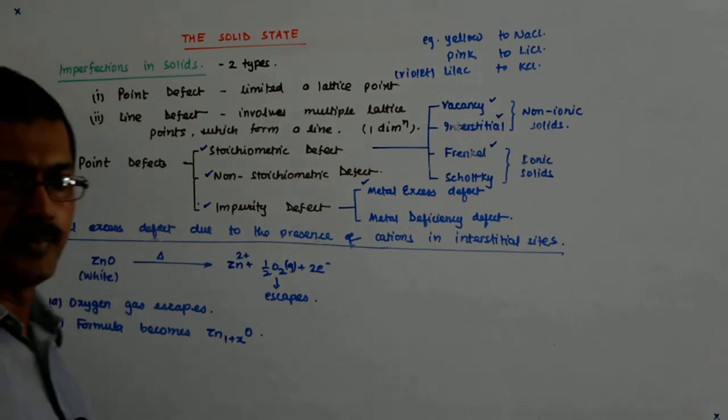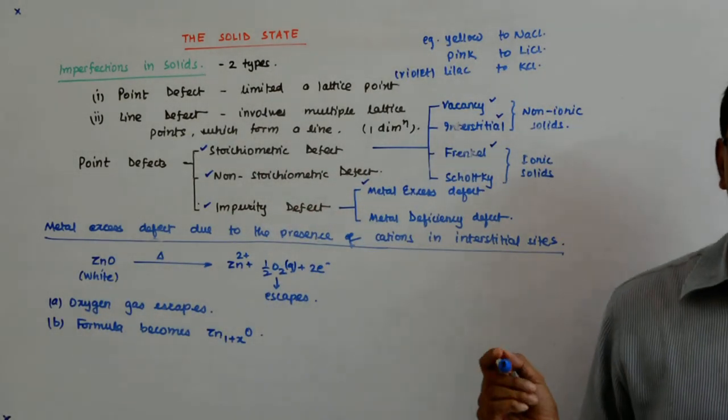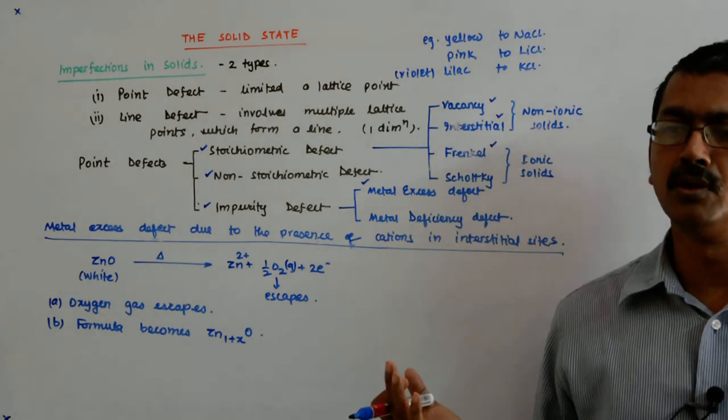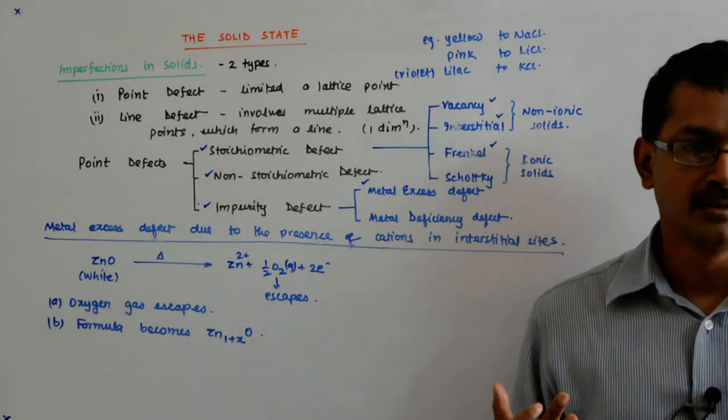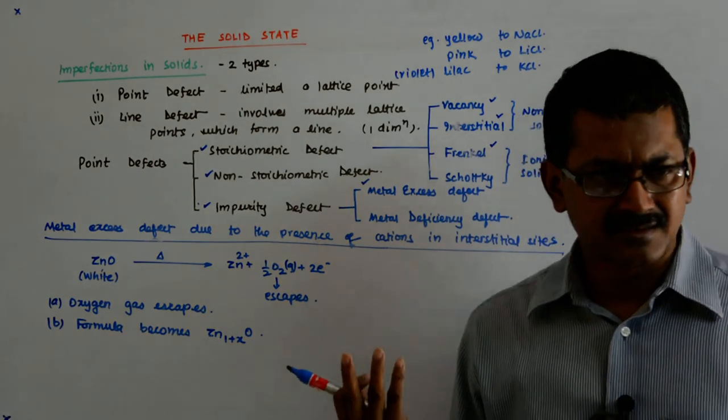You understand? Per molecule, instead of one Zn, there are more. Why? Because the population of Zn and O, which was earlier equal, O has started leaving. So per oxygen atom, now there are more Zn's.